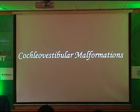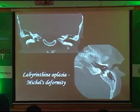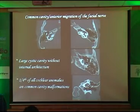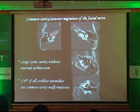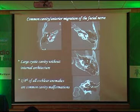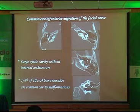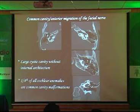Cochlear vestibular malformations are very common. Going from most severe to less severe: the most severe is Michel aplasia, where almost the whole labyrinth is not seen — complete absence of inner ear structures, very severe and very rare. Next in descending severity is common cavity, where the patient does not have a cochlea or a vestibule — both are fused to form a common cavity. One-fourth of all cochlear anomalies are common cavity malformations.